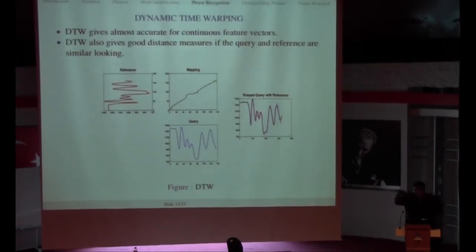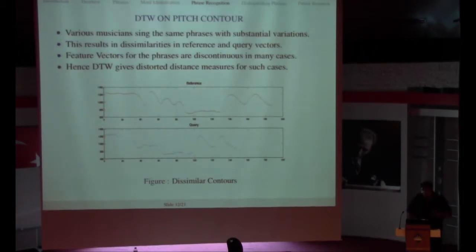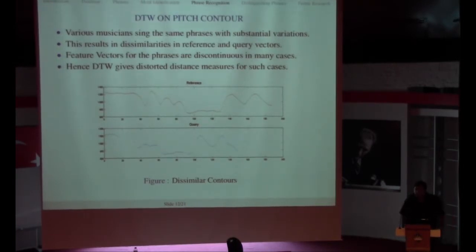Now what we thought, we tried to recognize these phrases using DTW. As you can see, DTW gives almost accurate results for continuous feature vectors like pitch contours. When the reference and query are pretty similar and continuous, the warping is pretty nice. You can see that the overlap is really nice and very little parts of the reference can be seen, and the overlap between the reference and query is really nice.